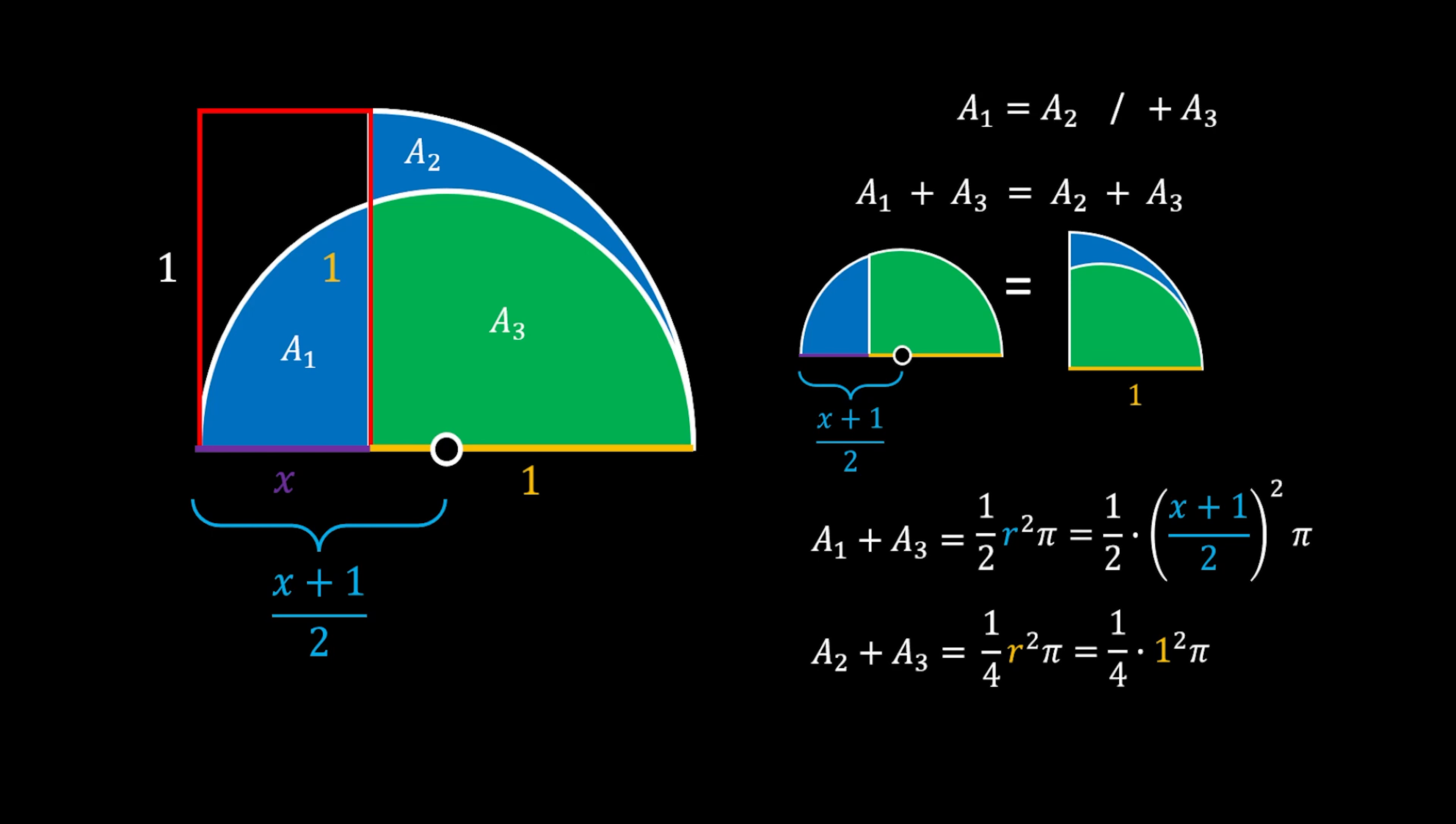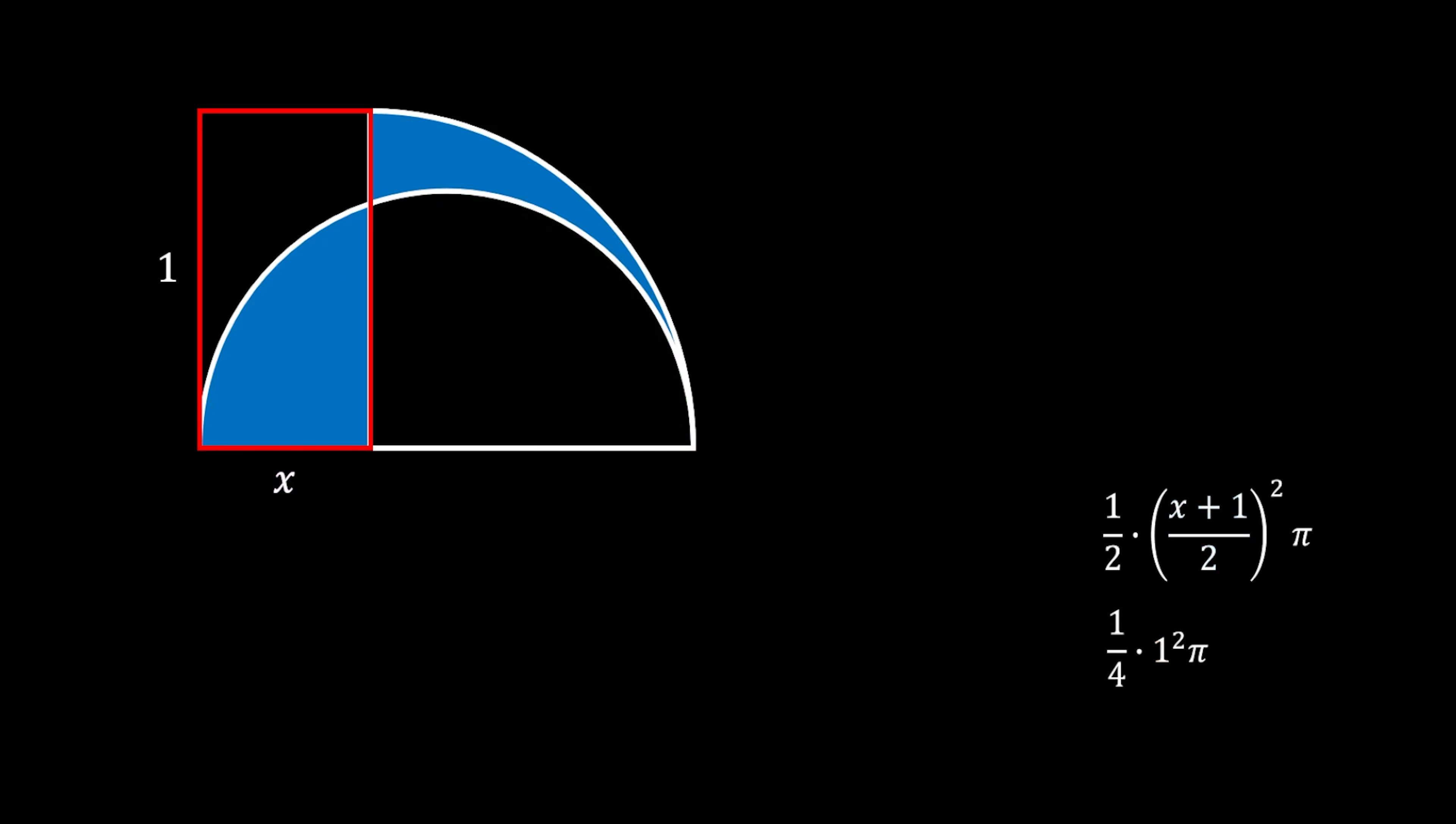These two areas are equal, so we can combine these expressions to form an equation. Simplifying gives us (1/2)[(x + 1)²/4]π = (1/4)π. Multiplying the factors gives us the following.